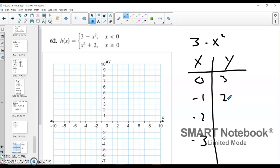2 squared is 4, 3 minus 4 is negative 1. And then 3 squared is 9, 3 minus 9 is negative 6. Okay, so there's my first one.